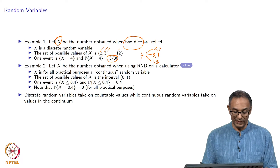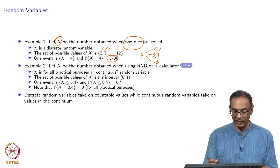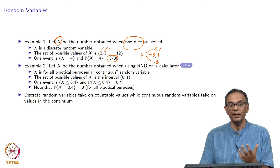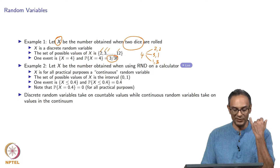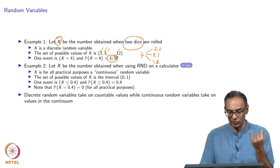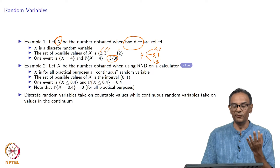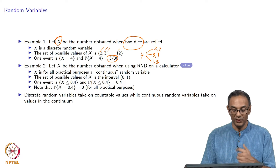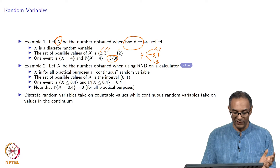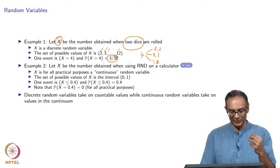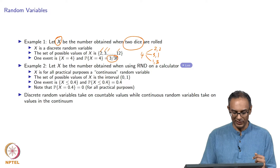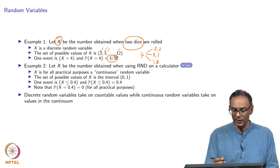X is a discrete random variable because it takes on specific discrete values — it will either take the values 2, 3, 4, 5, 6 and so on until 12. Because it takes specific values, it is called a discrete random variable.